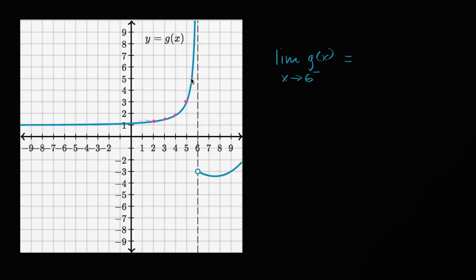g of 5.5 looks like it's around five. g of, let's say, 5.75 looks like it's like nine. And so as x gets closer and closer to six from the left, it looks like the value of our function just becomes unbounded. It's just getting infinitely large.